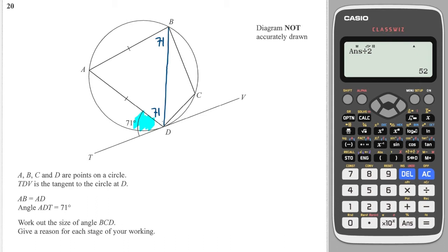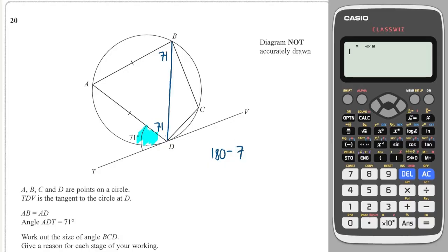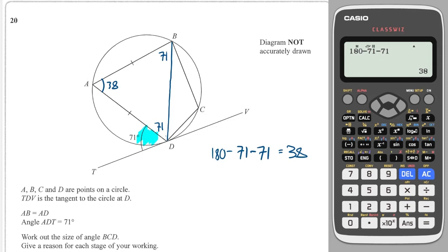That means this angle is also 71° because we have an isosceles triangle, so the angle at the top is 180° − 71° − 71° = 38°. Since this quadrilateral is cyclic — each corner touches the circumference — opposite angles in a cyclic quadrilateral add to 180°, so the angle we want is 180° − 38° = 142°.